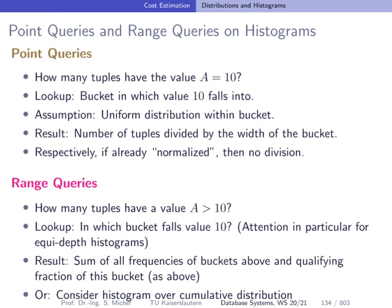Once a histogram is built, you want to use it. Querying an equi-width histogram is straightforward. For a point query, first determine which bucket the value falls into. Then take the bucket's absolute frequency and divide it by the bucket width. This assumes all values within a bucket appear with the same frequency — a uniformity assumption.